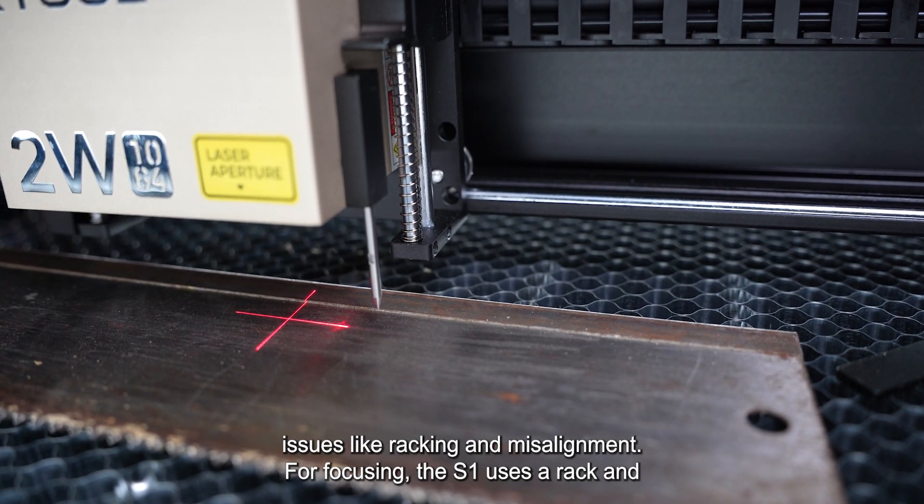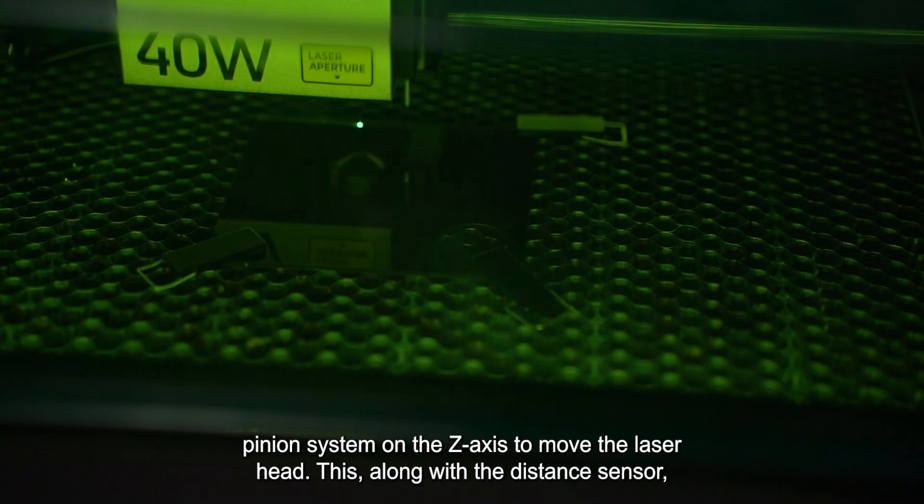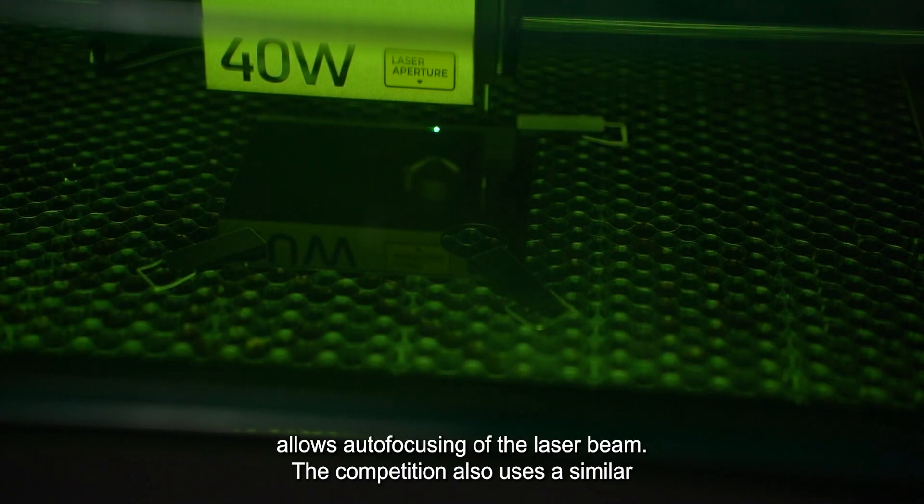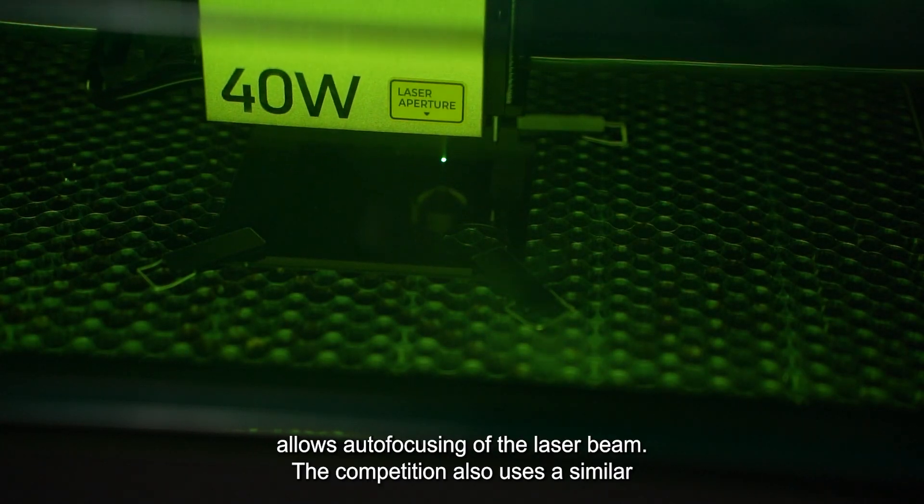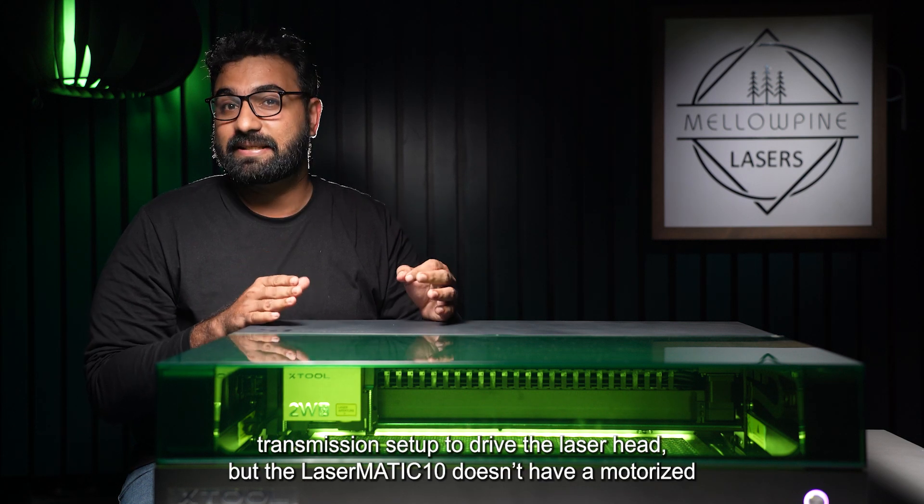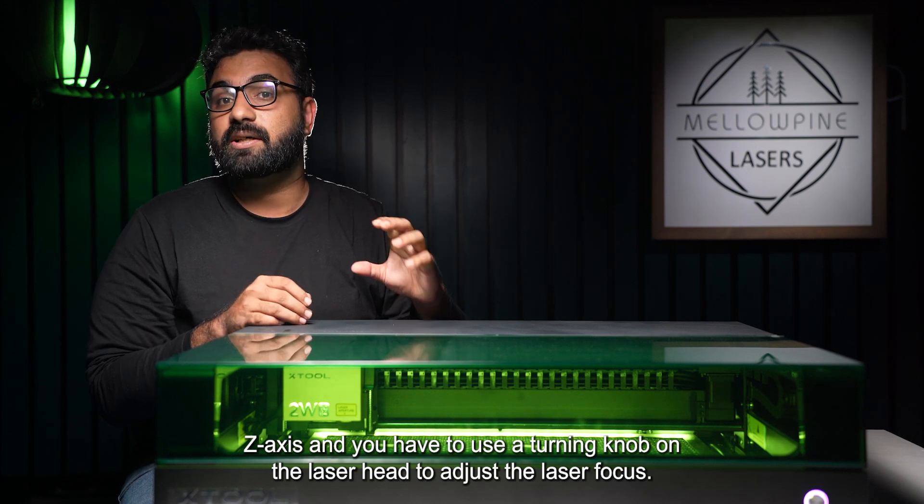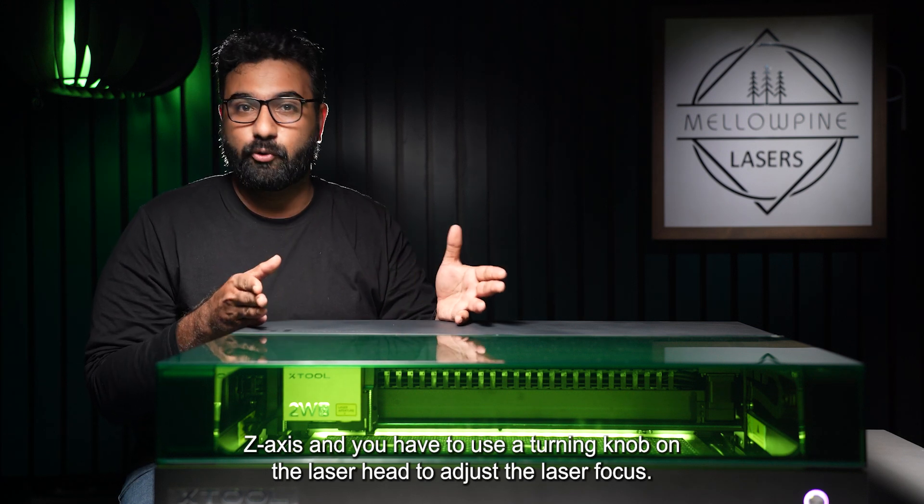For focusing, the S1 uses a rack and pinion system on the Z axis to move the laser head. This, along with the distance sensor, allows auto-focusing of the laser beam. The competition also uses a similar transmission setup to drive the laser head, but the Lasermatic 10 doesn't have a motorized Z axis and you have to use a turning knob on the laser head to adjust the focus.